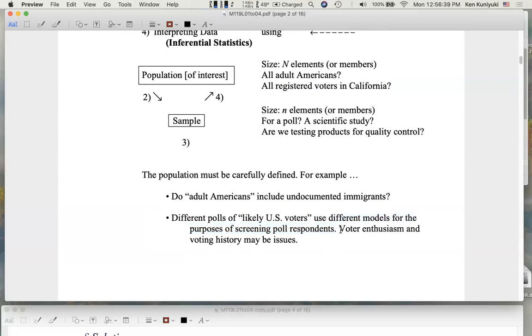Well, more objectively, you could look at issues like voter enthusiasm and voting history. So for example, it's often assumed that someone who voted in a midterm election or in the last presidential election might be more likely to vote in the upcoming presidential election. So defining the population of interest is important.